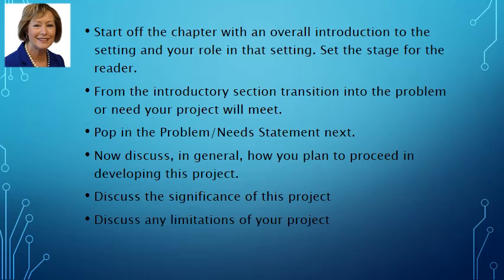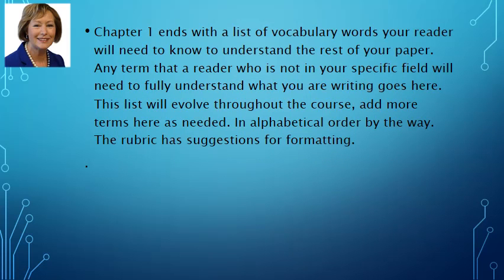If you have questions about limitations, contact me. Chapter 1 ends with a list of vocabulary words your reader will need to know to understand the rest of your paper. Any term that a reader who is not in your specific field will need to fully understand what you're writing goes in this list. This list will evolve throughout the course as you continue to work on your paper, so go back and add more terms as needed. The list should be in alphabetical order, and the rubric has suggestions for formatting.